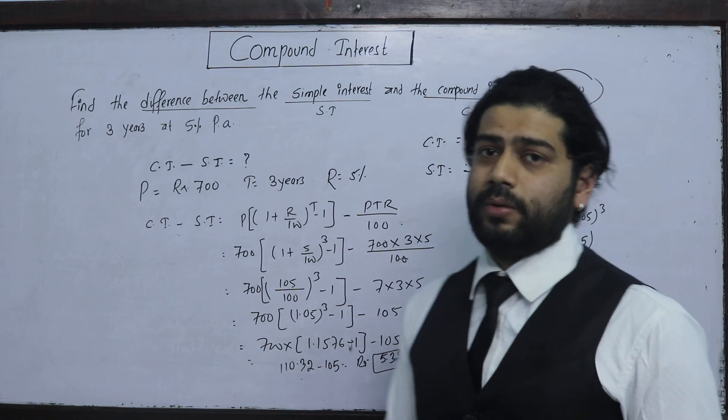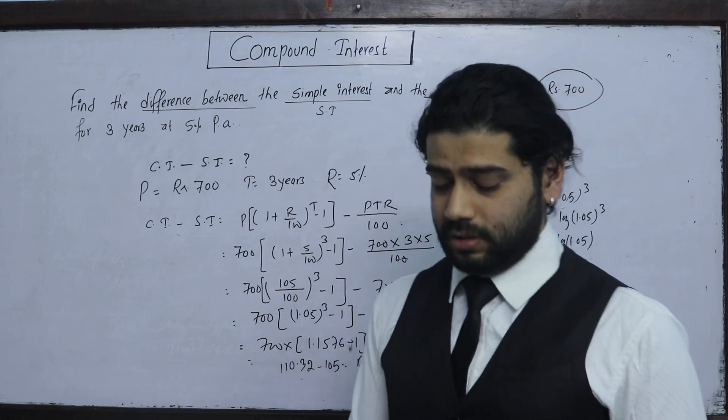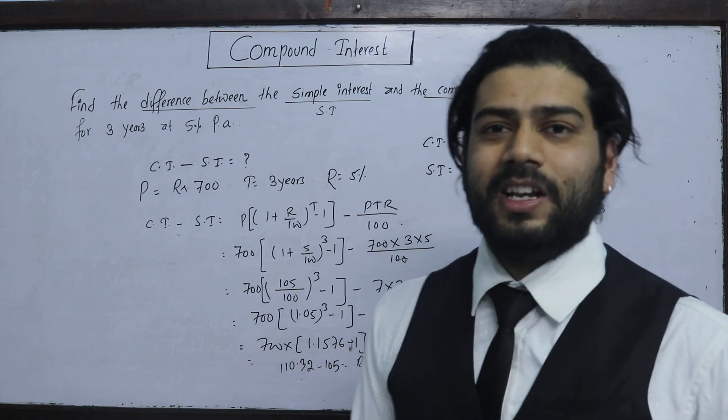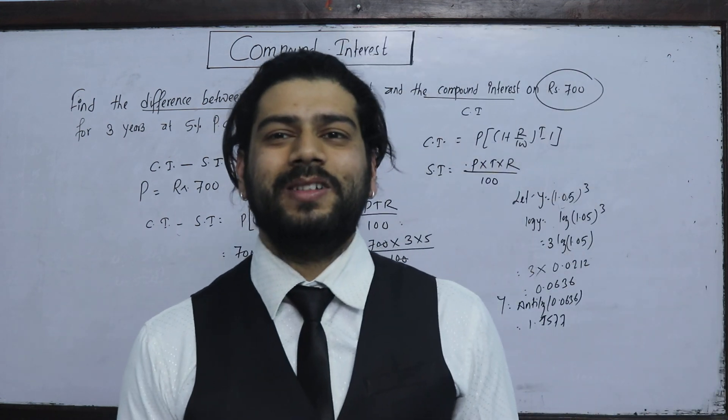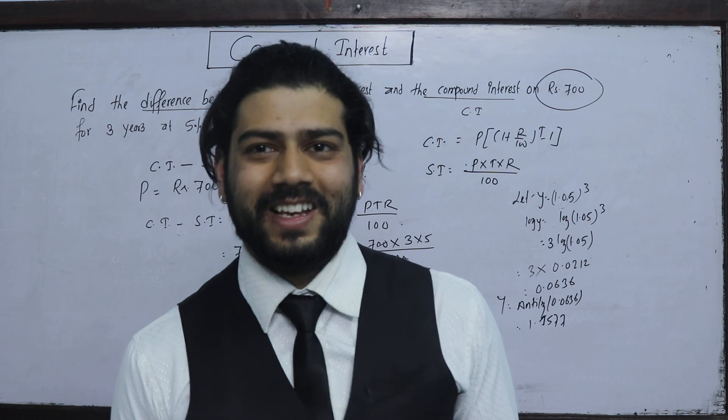The difference between CI and SI is 5.32 rupees. The equation is solved. Next class will cover the examiner equation. Thank you.